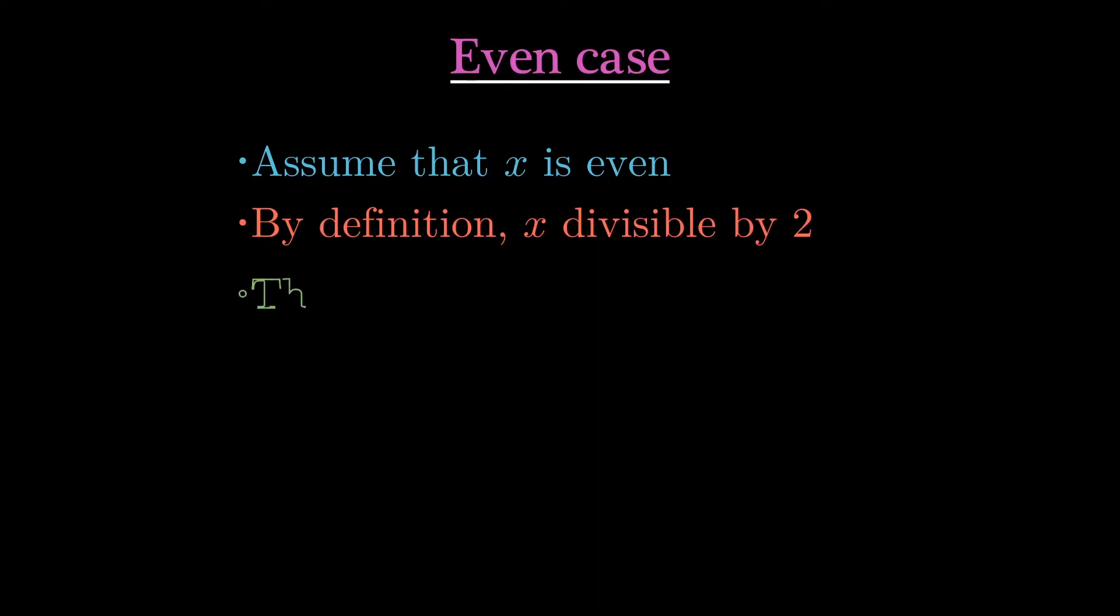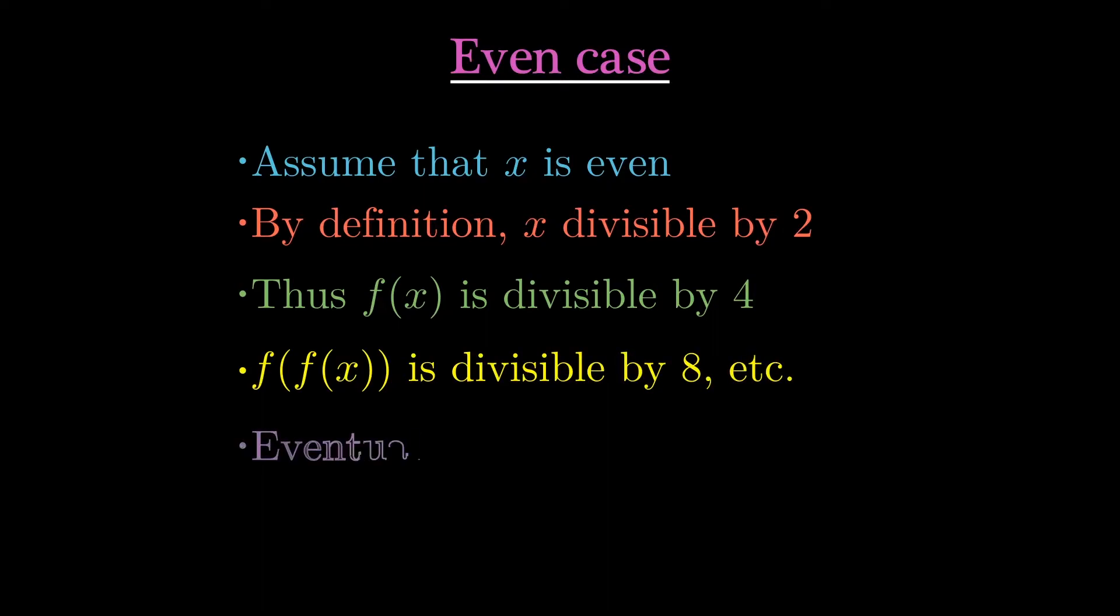Now let us consider the cases separately. First, assume that x is even. Then by definition, x is divisible by 2. Therefore, f of x is divisible by 4, f of f of x is divisible by 8, etc. Eventually, under some application of f, this will give us 2 to the k, which is n, and that's going to give us 0 mod n.